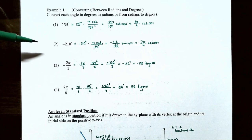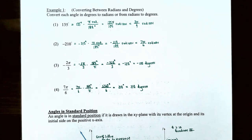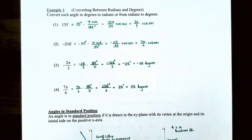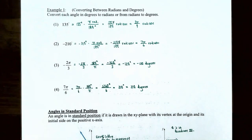Number two: convert negative 210 degrees to radians. Multiply negative 210 degrees by pi over 180 to get negative 210 pi divided by 180. Simplifying negative 210 over 180 gives 7 over 6, so the result is negative 7 pi divided by 6 radians, which is equivalent to negative 210 degrees.